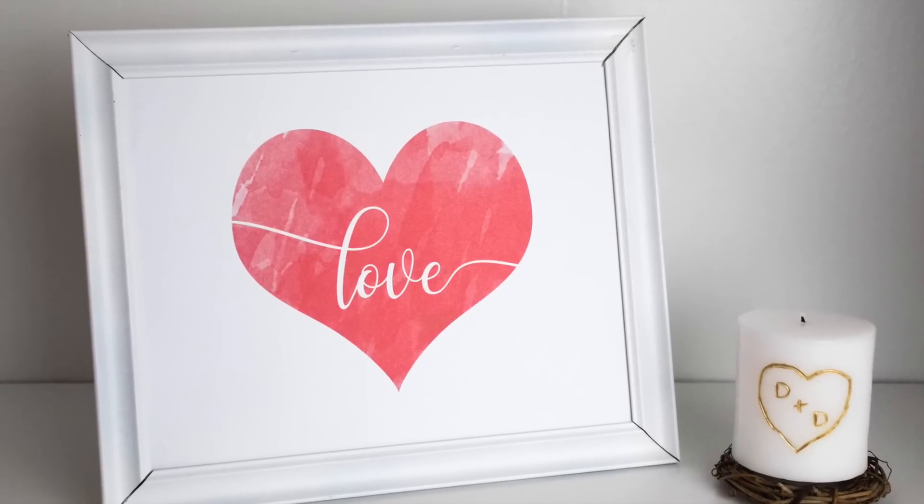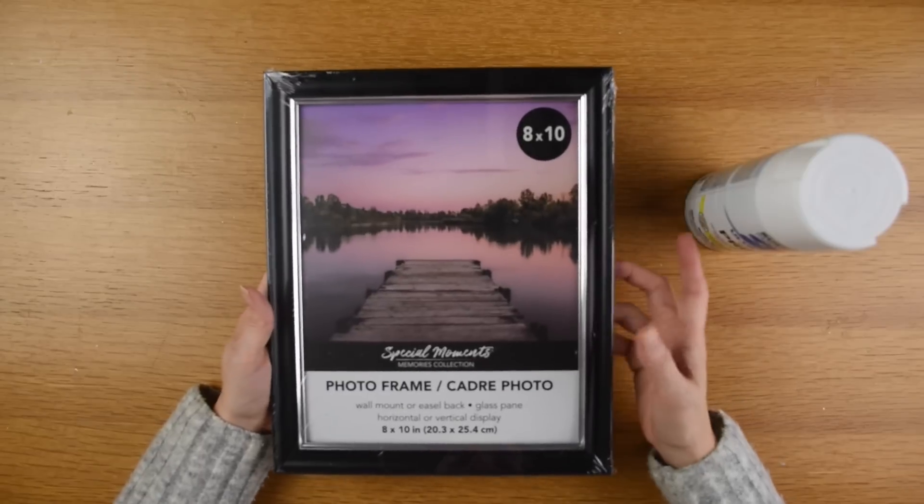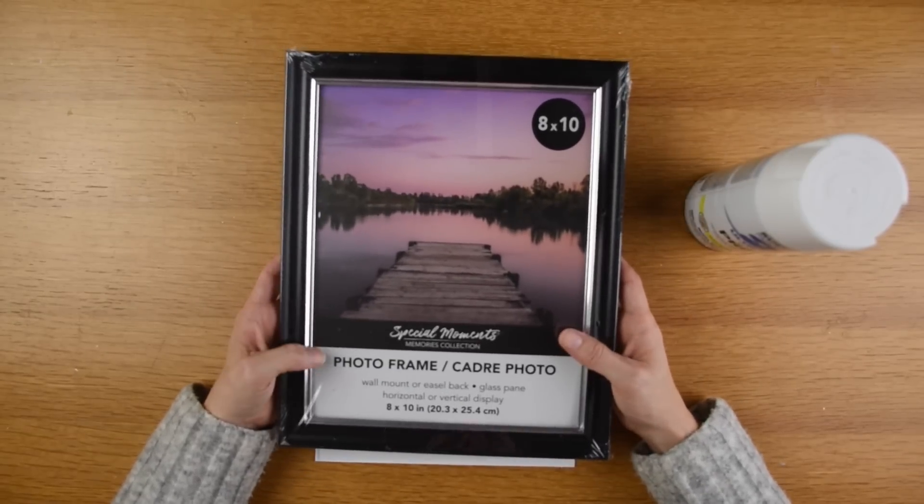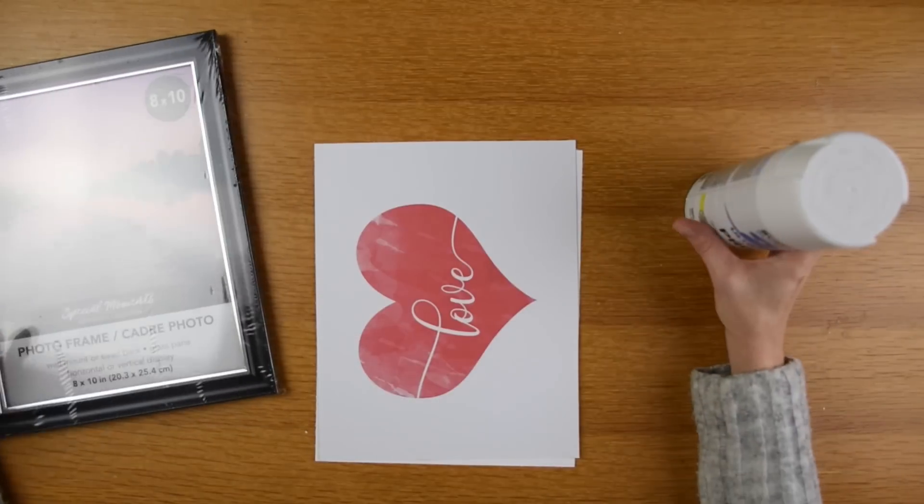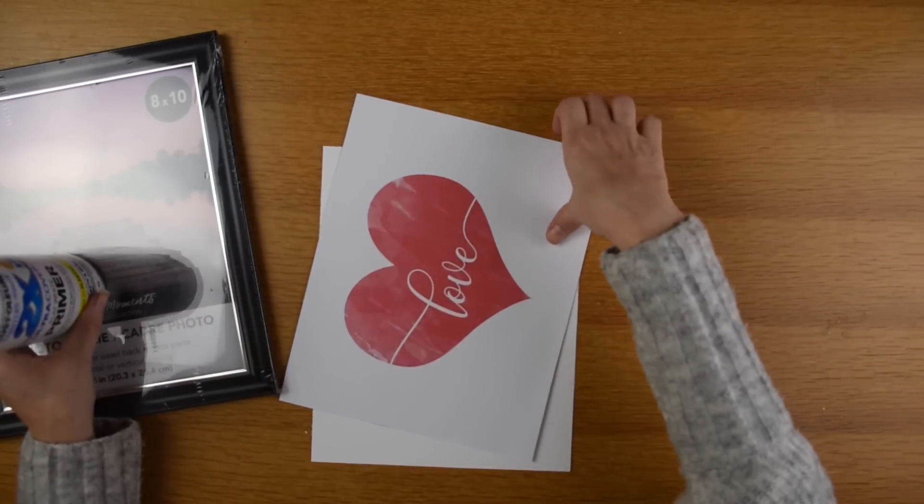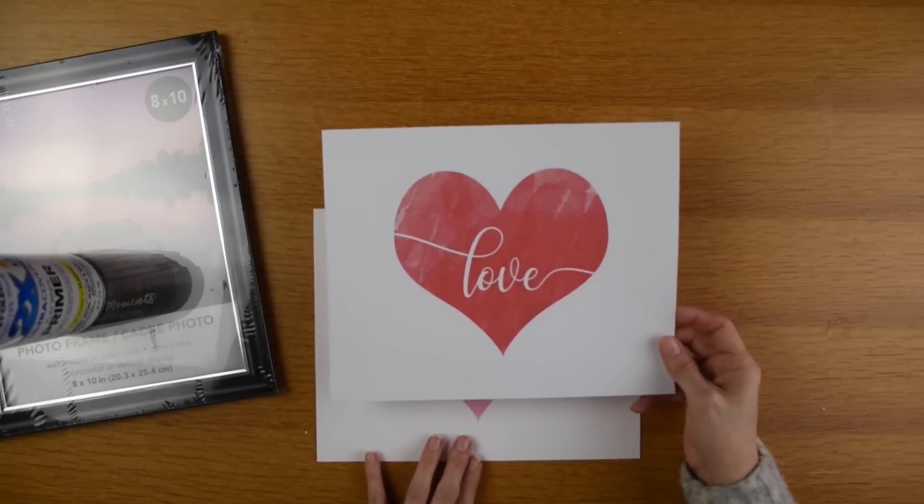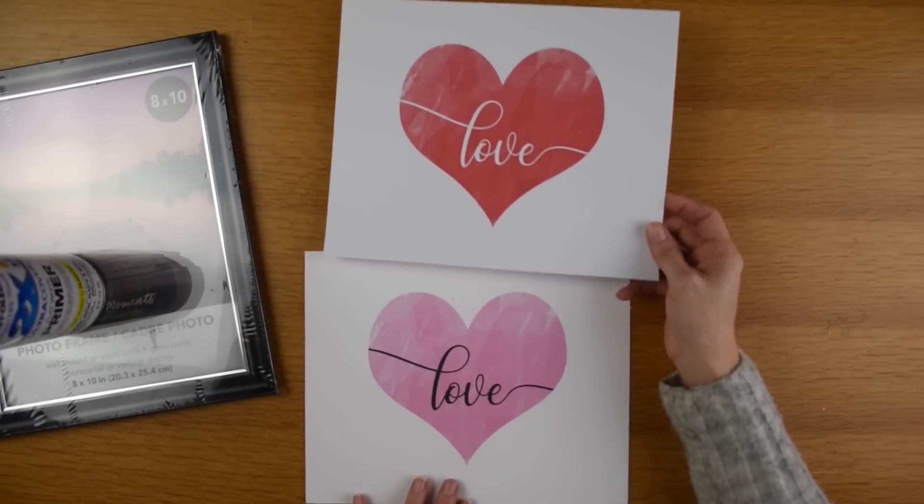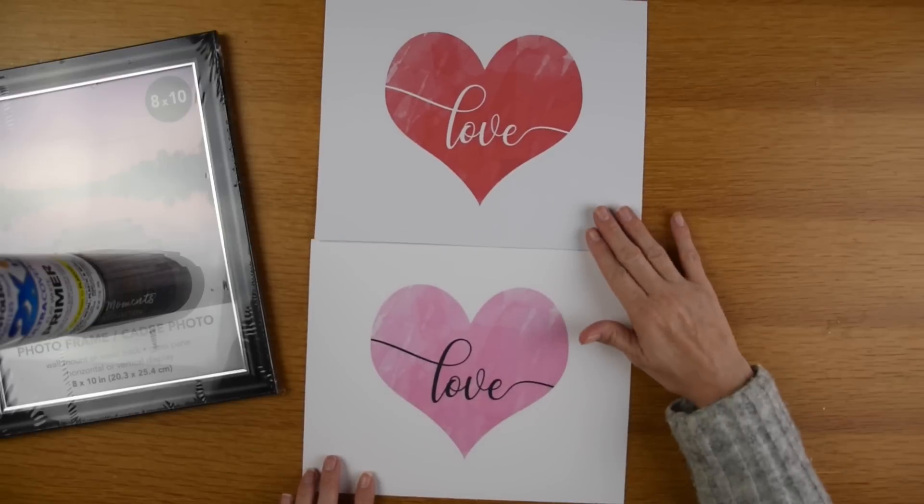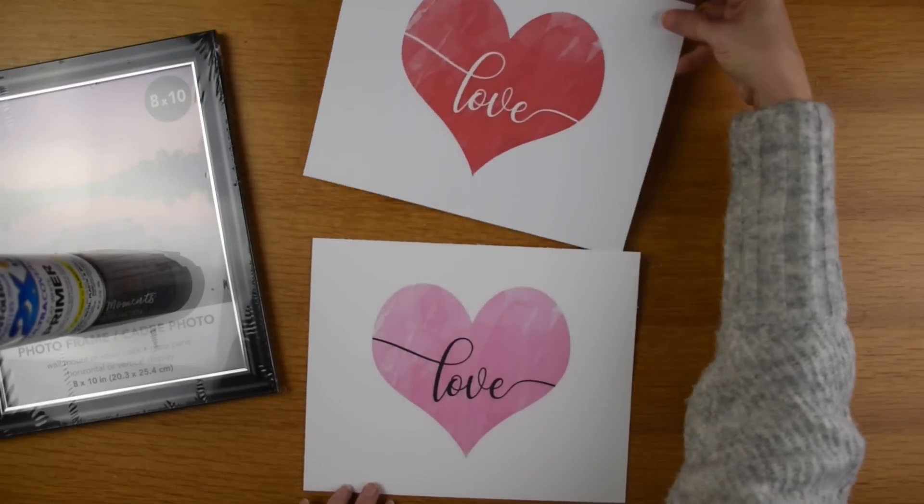First up is this love frame and I love how this looks. For this project I am using an 8x10 photo frame from the Dollar Tree. Also I'm going to be using white primer. I'm going to be using this love printout that I made. I do have it available on my website for you to download. I have both versions here, a pink and black one and a red and white one so you can use either one.